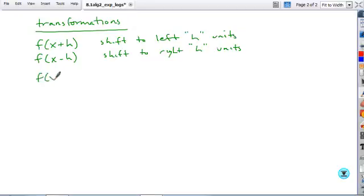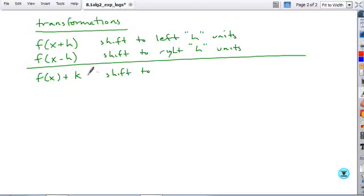Okay, what does F of X plus K do? Okay, now, when the transformation occurs outside of the function, it's going to move it vertically up or down. So, the plus K is going to move it up K units. And if we took F of X minus K, that's going to shift it down K units.